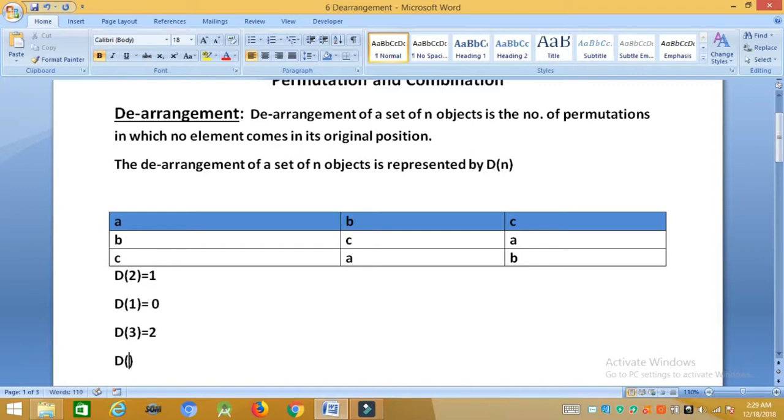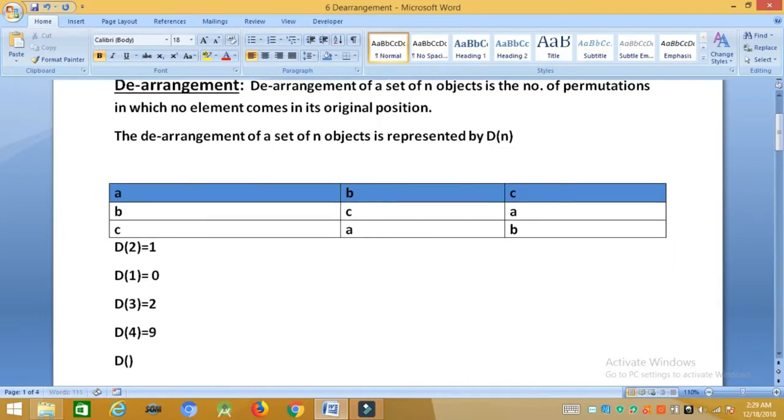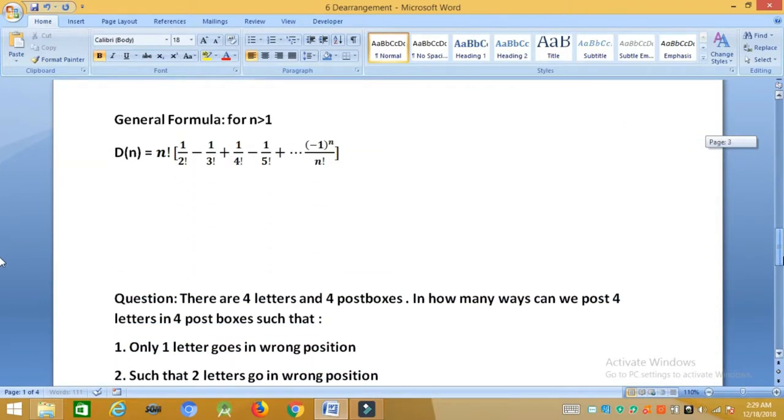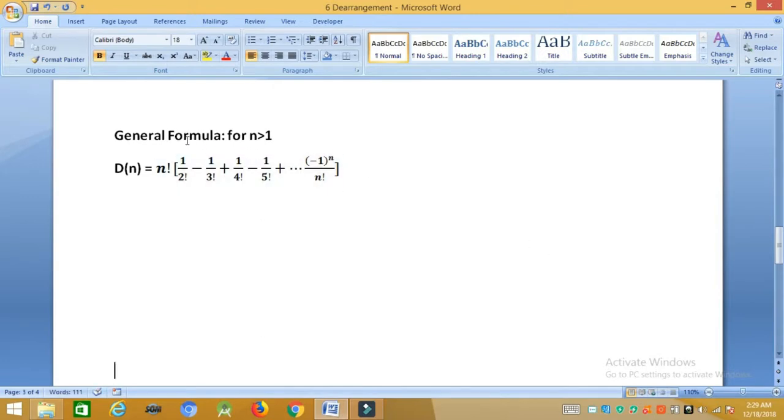Similarly, you can memorize that for 4 objects it is 9. You can tabulate it for yourself. And for d5 it equals 44. We can actually have a general formula to calculate derangement of n number of objects. The general formula is for n greater than 1, it is dn equals factorial n bracket, 1 upon factorial 2 minus 1 by factorial 3 plus 1 by factorial 4 minus 1 by factorial 5 plus up to minus 1 to the power n upon factorial n. This is the general formula. By this you can calculate for n number of objects. n has to be greater than 1 in this case.